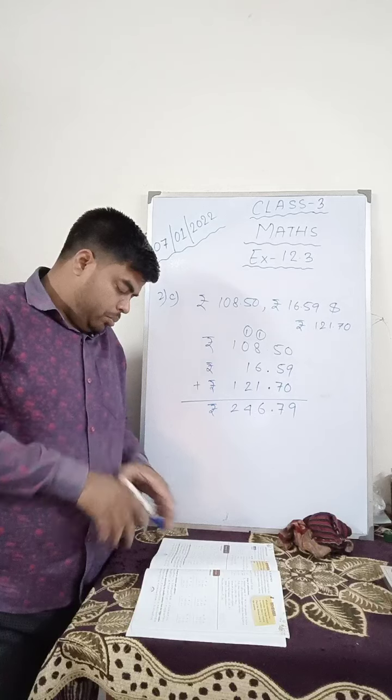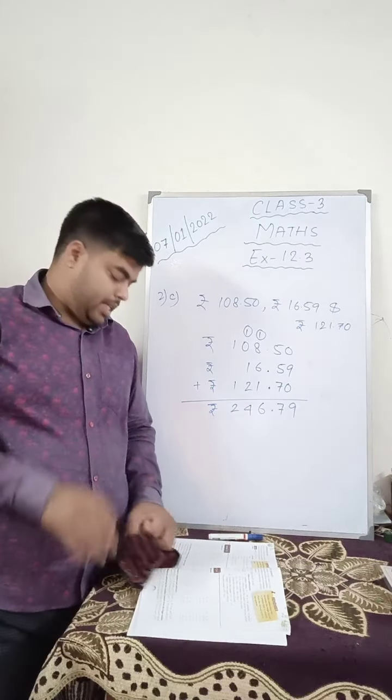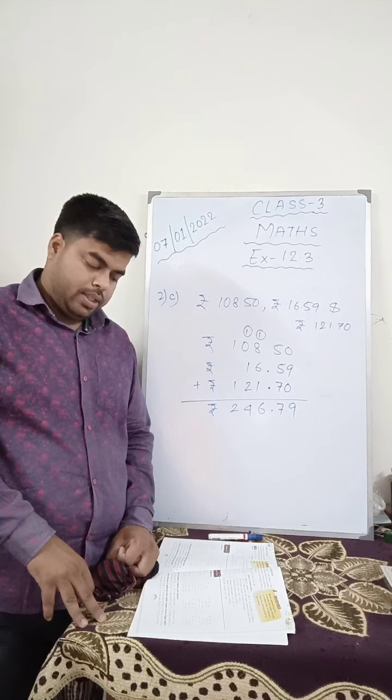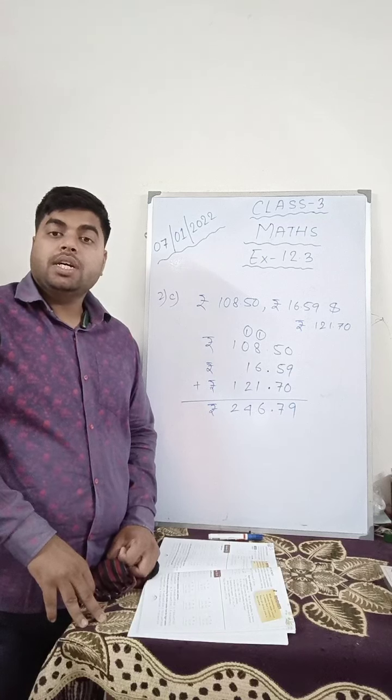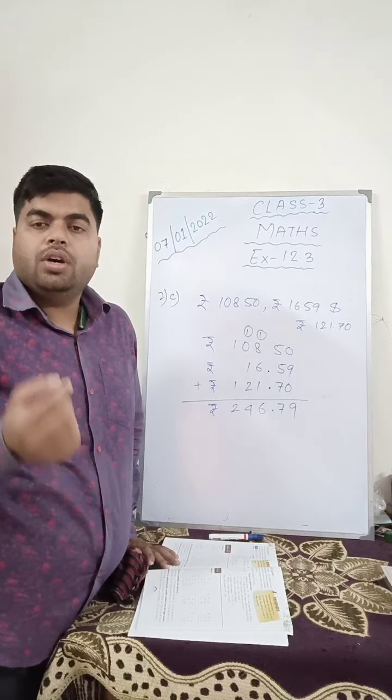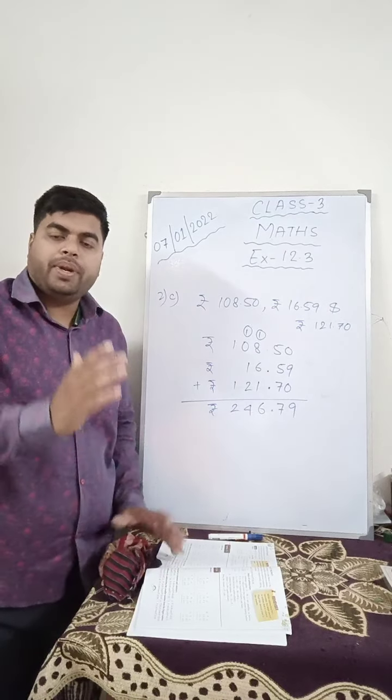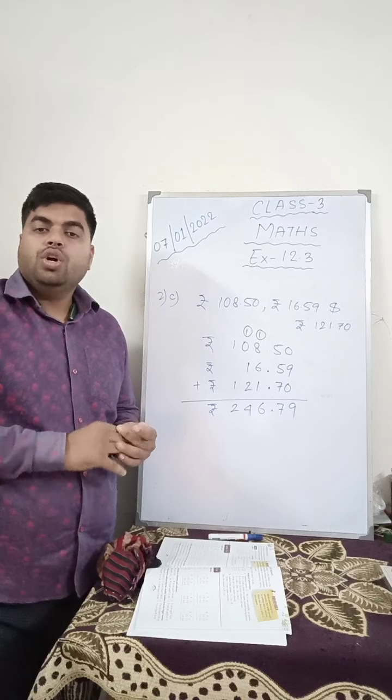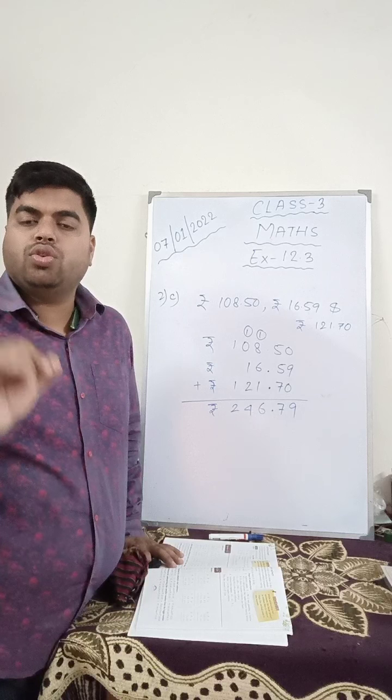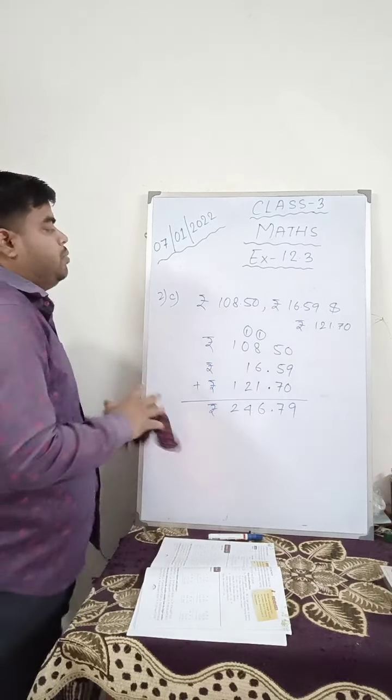Next, there is question number 3. Find the sum, its addition, and write the answer in rupees with the decimal point. Whenever we write rupees, we put decimal to separate rupees and paisa. If you write the unit rupees, then you have to put decimal to separate rupees and paisa. Let me show you one.